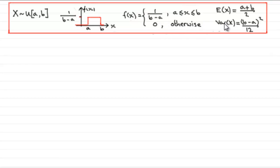We're going to work towards proving the variance of x is b minus a all squared over 12. You should be familiar with the fact that the variance of x is always equal to E of x squared minus E of x all squared.